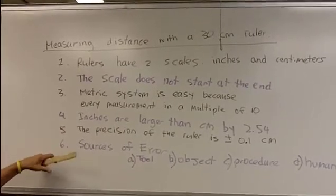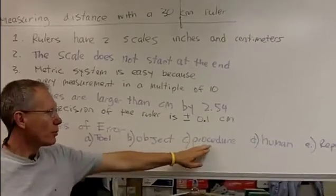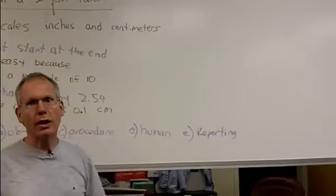And the last one, the sources of error. There's the tool source, the object itself, the procedure how you measure it, human error, and error in reporting.